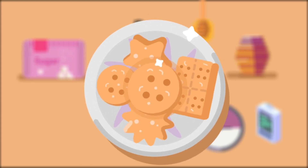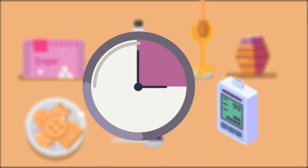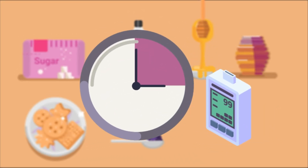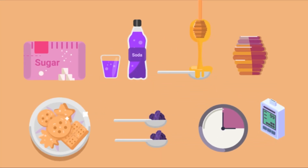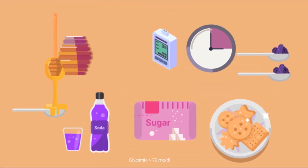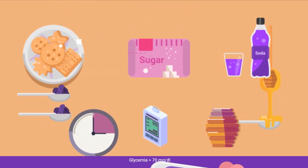Check your glucose level 15 minutes after this and verify that it has returned to normal. This process should be repeated until glycemia is greater than 70 mg per deciliter.